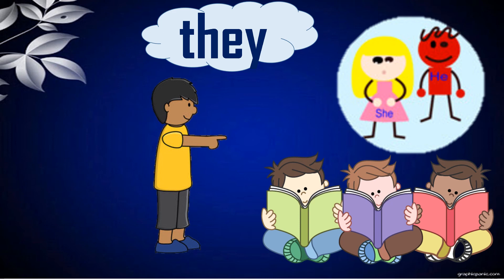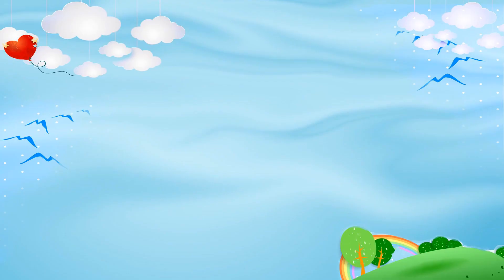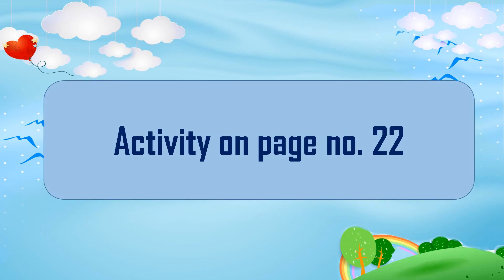So in this way we have learned about I, we, you, plural you, he, she, it, and they. There is an activity on page number 22 in our book. Do that activity after watching this video, and watch this video again and again so that you will come to know what are nouns and what are pronouns. Thanks so much for watching this video.